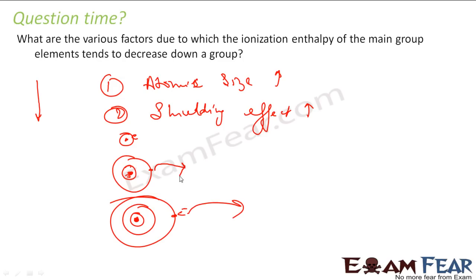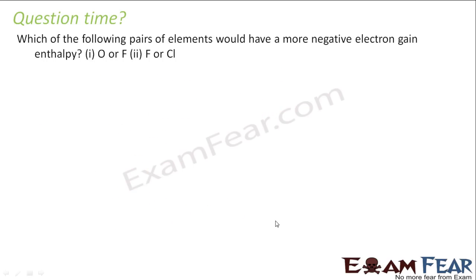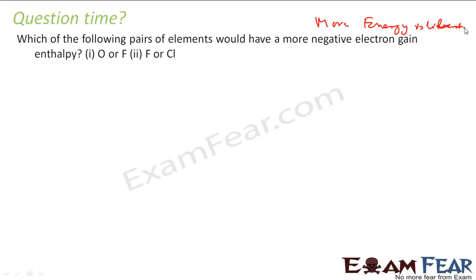Taking out an electron from a smaller atom is more difficult compared to a larger atom where the electron is less tightly held. The question asks which of the following pairs would have more negative electron gain enthalpy, meaning more energy is liberated when you add an electron.